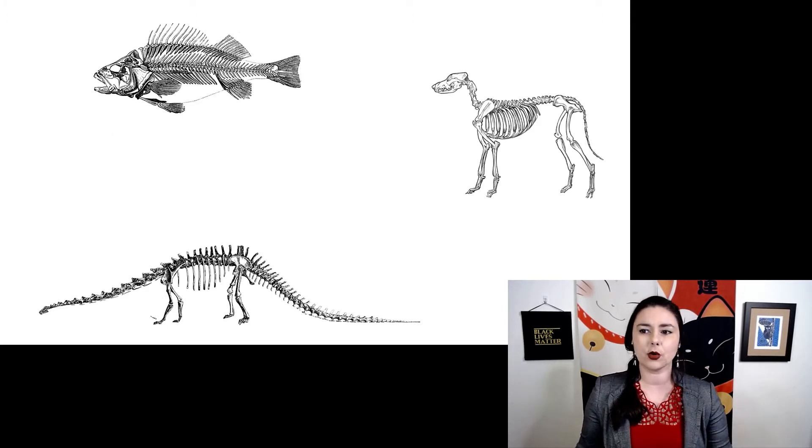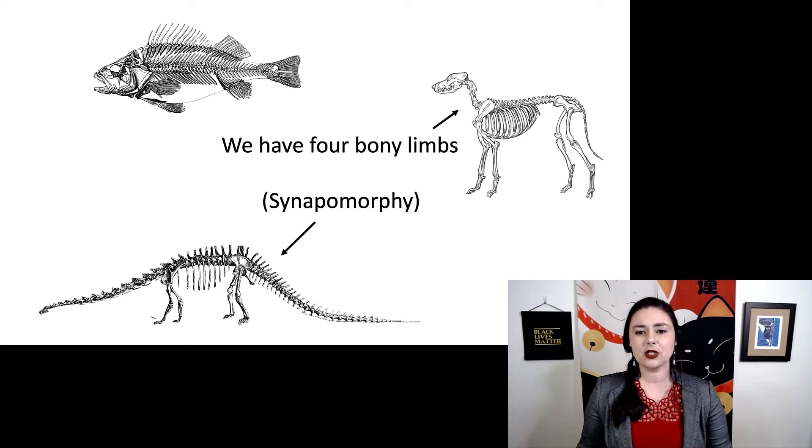So we can go back to these three organisms here. And now we notice that both our dog and our dinosaur have four limbs. So this is a synapomorphy. Again, these are both tetrapods, which our fish here is not.